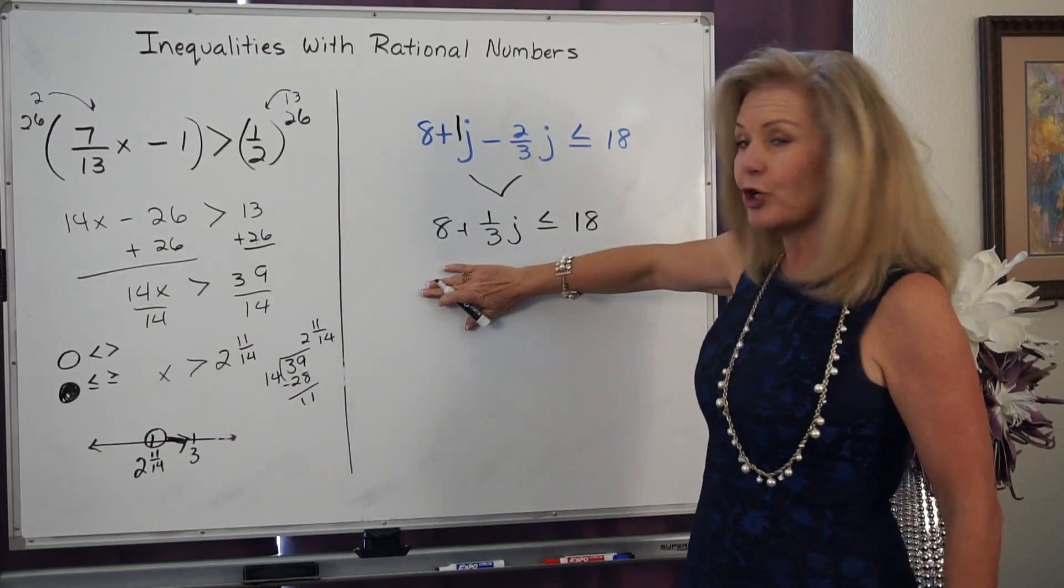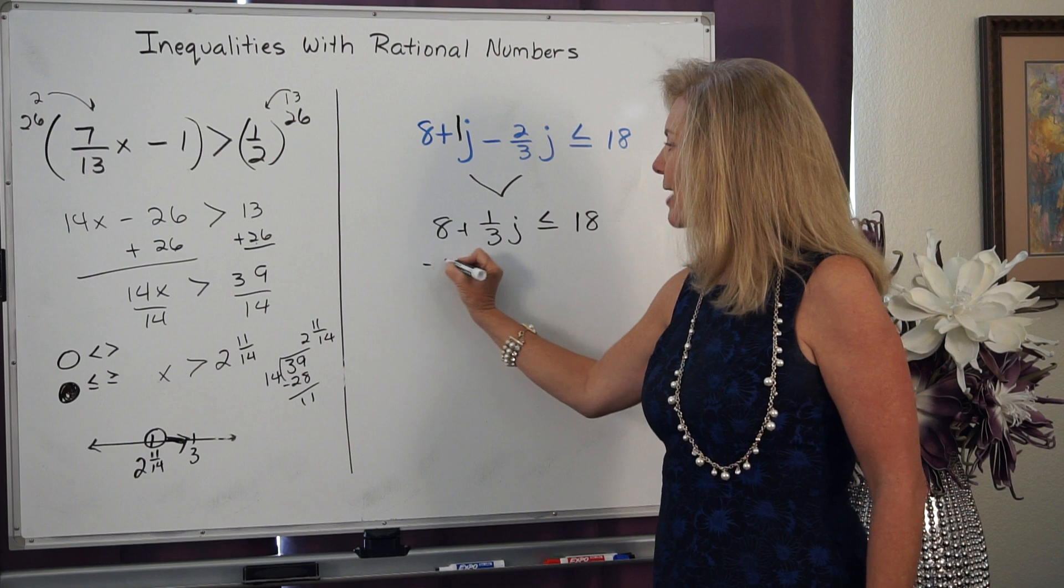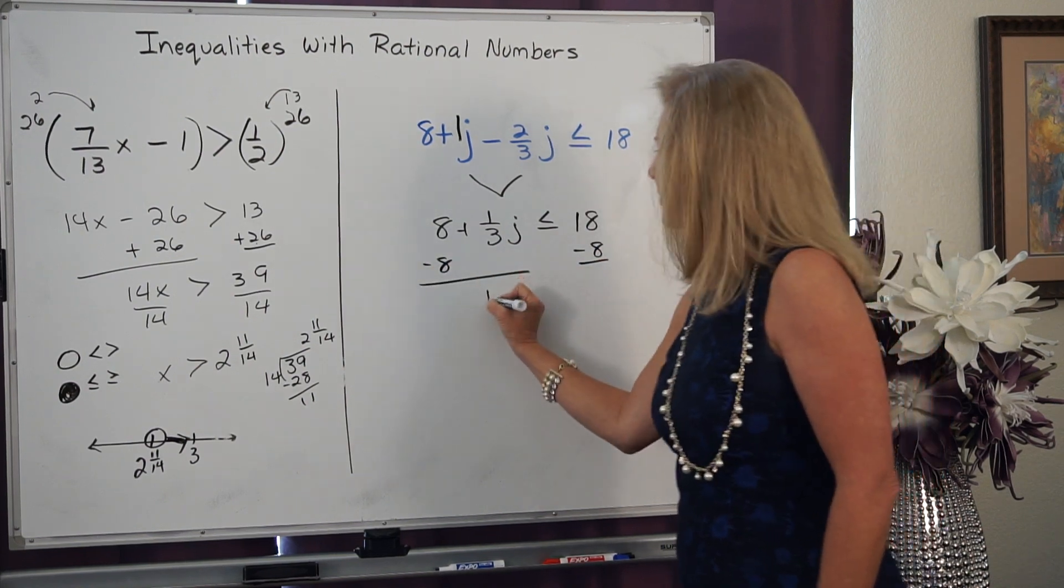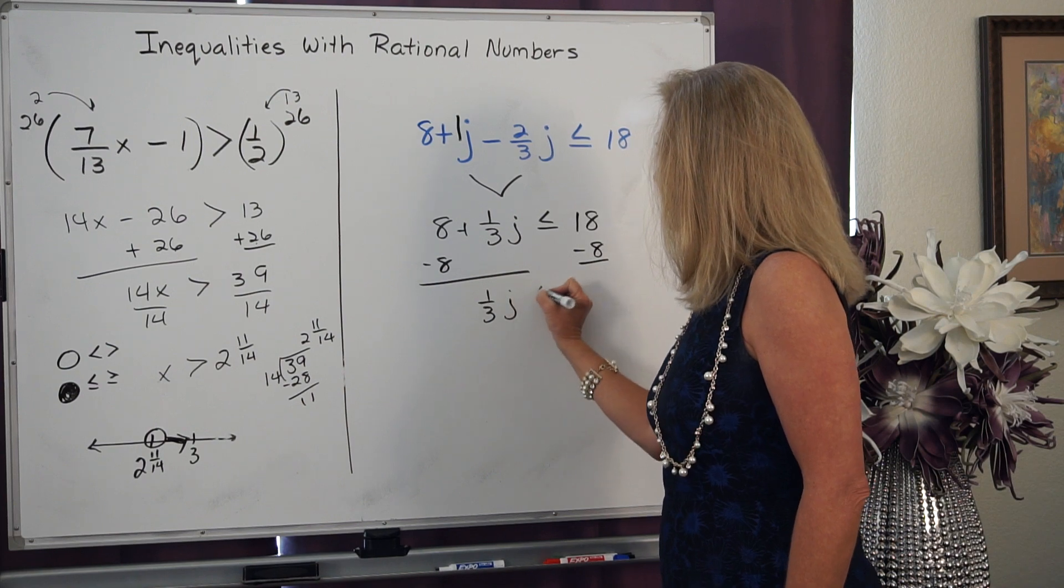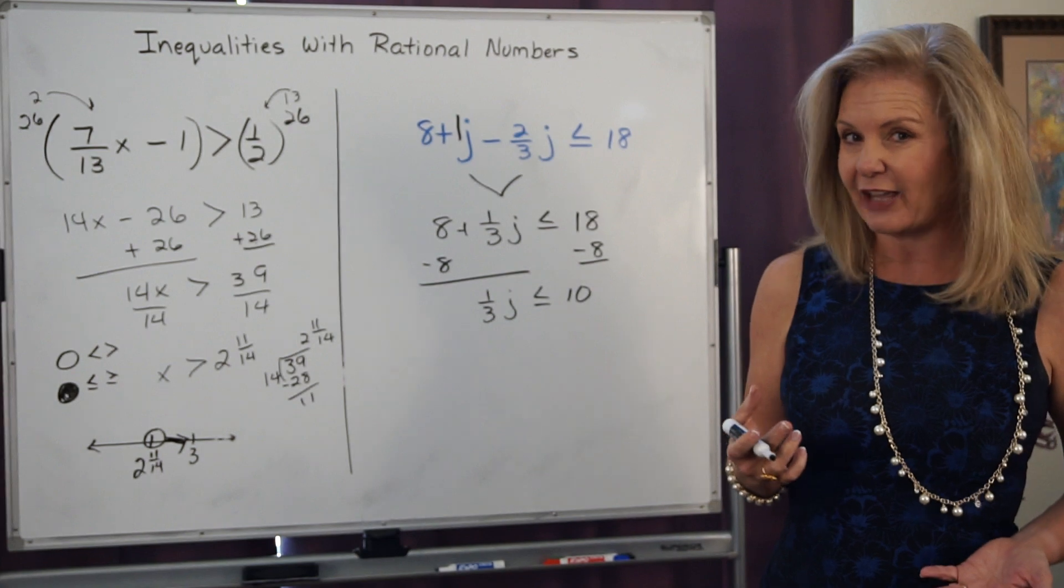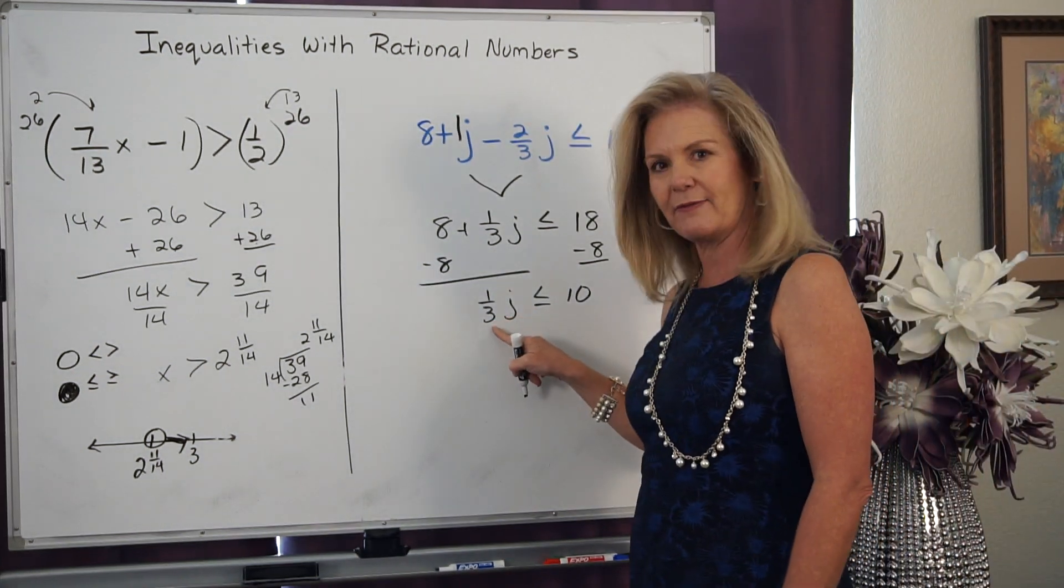Now, I could start off and I could just subtract that 8 from both sides. And I'm left with 1/3 J is less than or equal to 10. And I can use the multiplicative inverse to get rid of this 1/3.